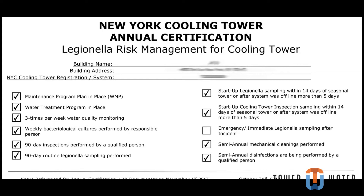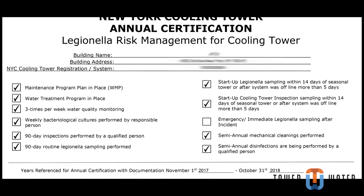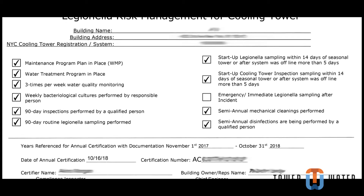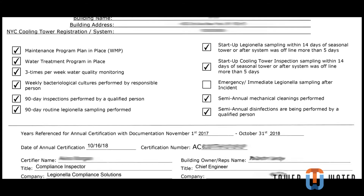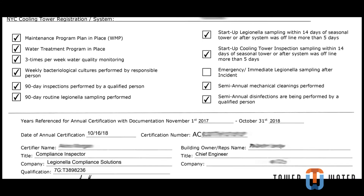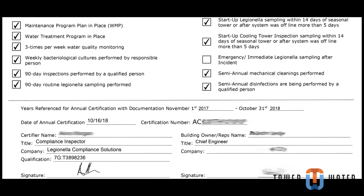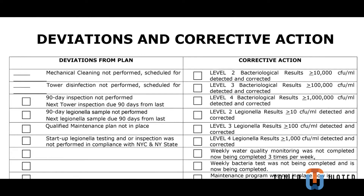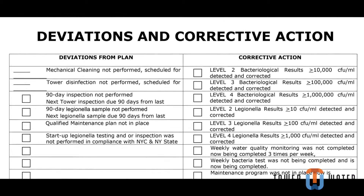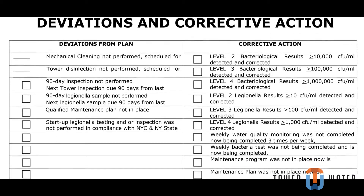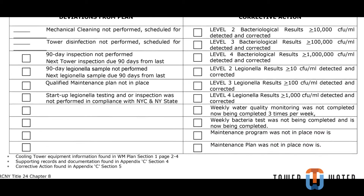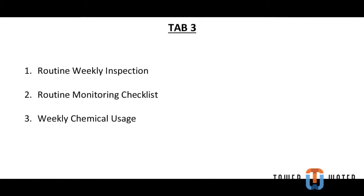In order to stay in compliance with New York City Local Law 77, the responsible person is required to perform the following tasks on their cooling tower water system. We will break down the necessary actions to be taken and explain how to fill out the appropriate paperwork for these tasks. Let's begin.